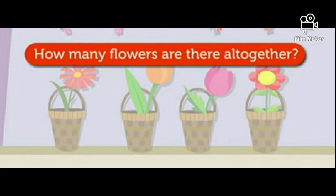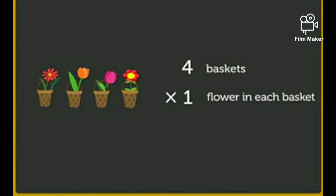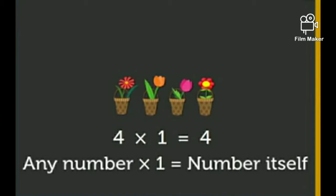How many flowers are there altogether? We have four baskets and one flower in each basket. If we multiply four into one, we get four. So we have four flowers in total — four baskets and one flower in each basket gives us four flowers.